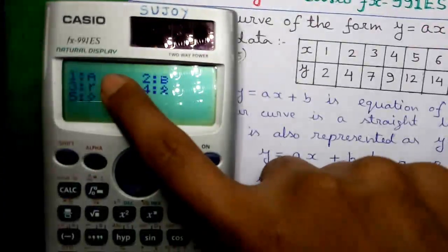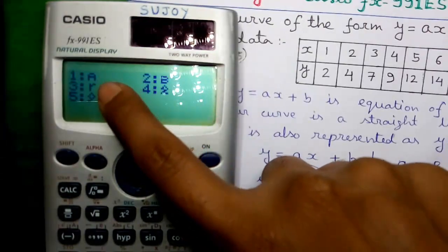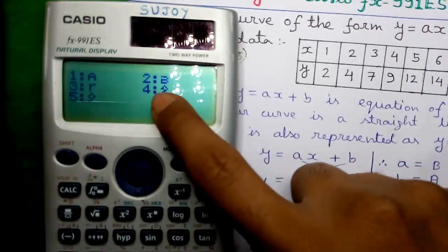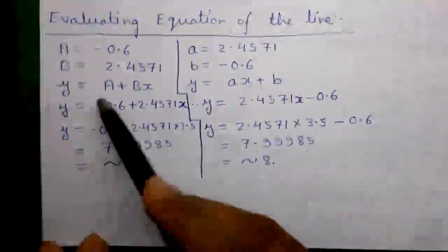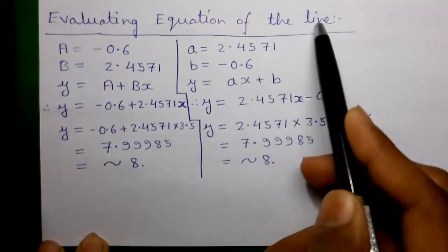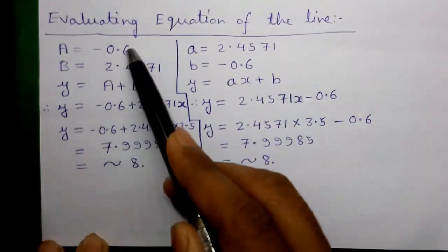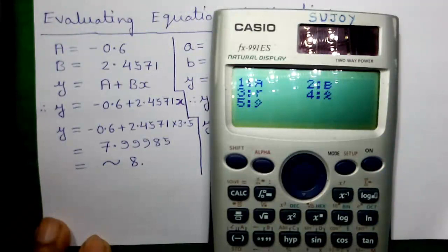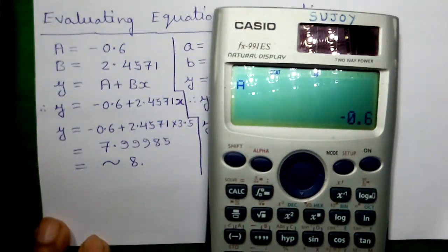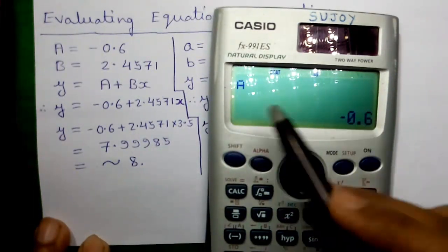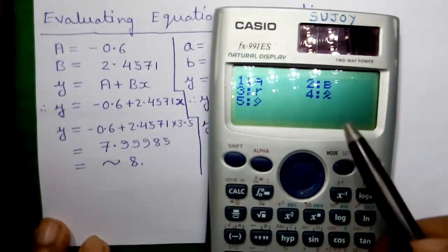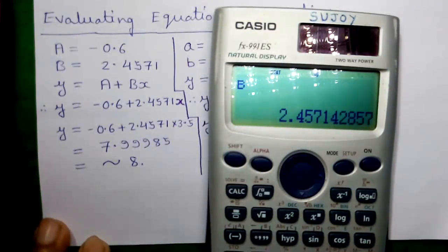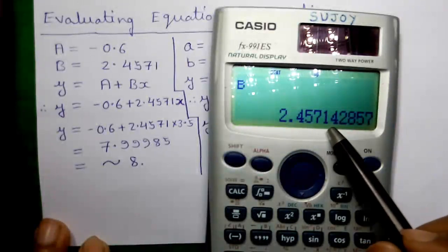And that's it. You can find out the values of A, B, R (the correlation coefficient), estimated values of X, and estimated values of Y. Next, let us evaluate the equation of the line. For that, first find out the value of A and B. Press 1 for A and press equals. So A equals minus 0.6. Similarly, for B, press Shift, 1, 7 and 2 for B. So B is 2.4571.